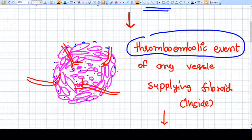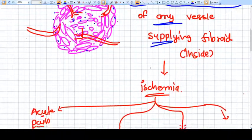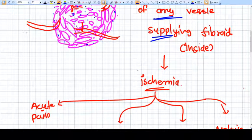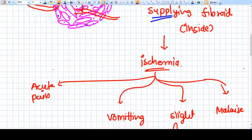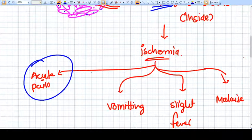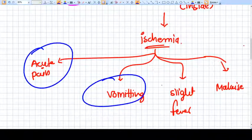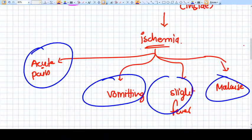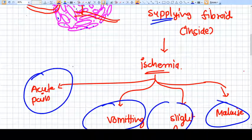Any ischemia, whether it can be of heart or muscle or whatever, it will cause acute pain, vomiting, fever, malaise. Because due to ischemia, certain cytotoxic substances are released into the blood system. That's why in any kind of ischemia you will get those symptoms.